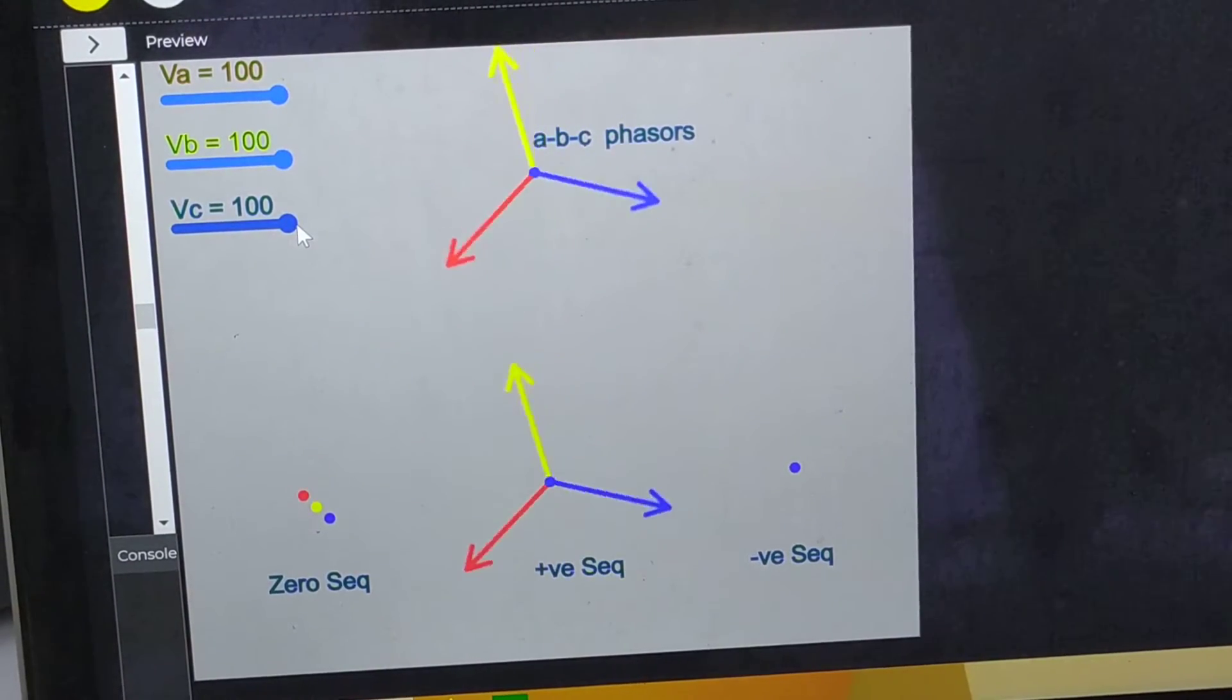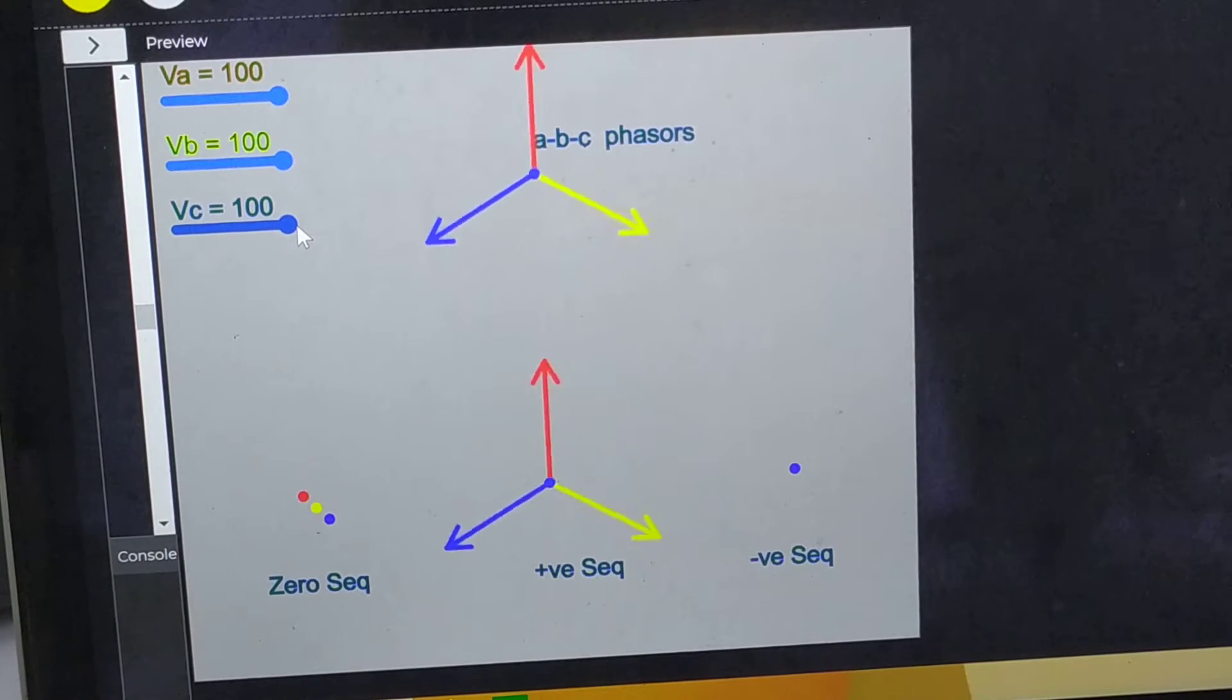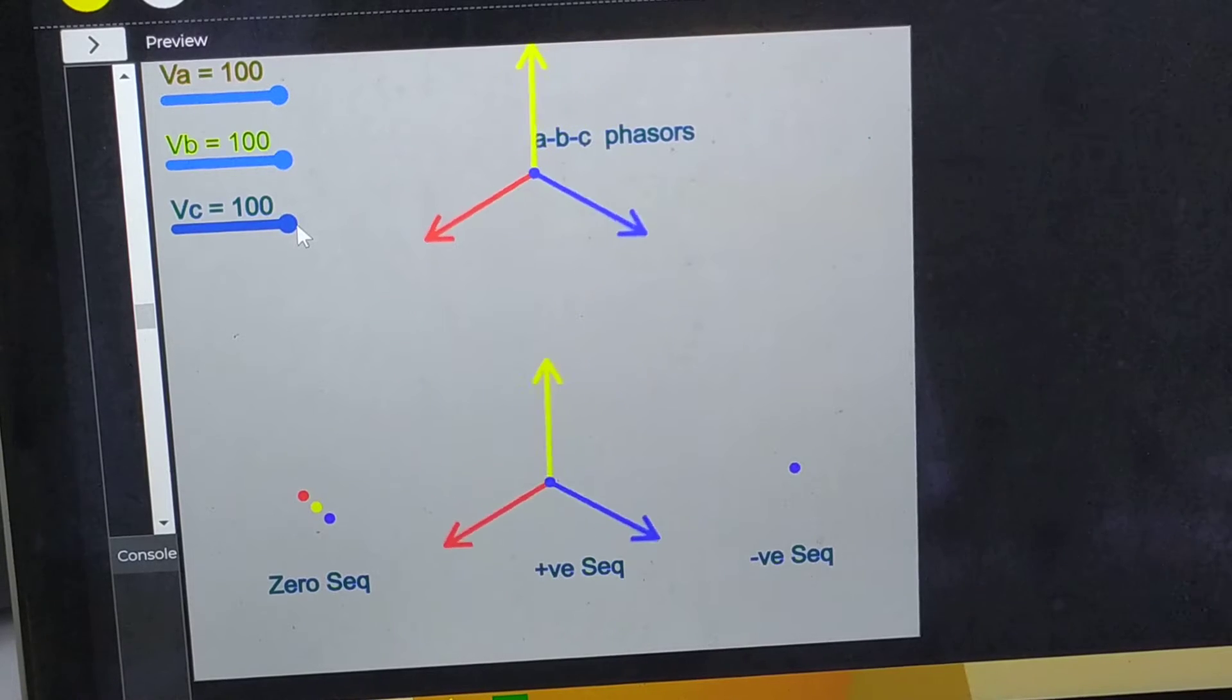Symmetrical Component Analysis. As you can see, we have got a set of balanced phasors: Va is equal to 100, Vb is equal to 100, Vc is equal to 100 shifted in phase by 120 degrees.